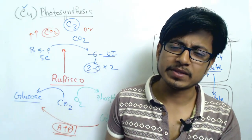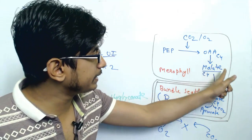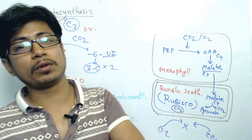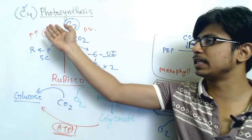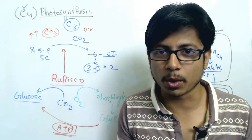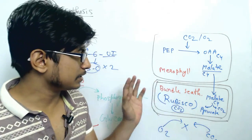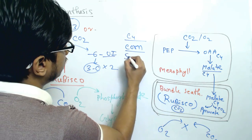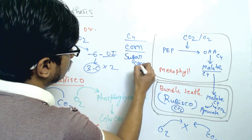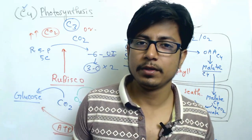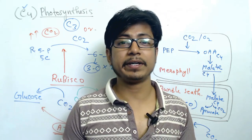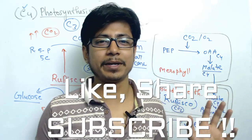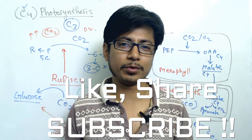That is the C4 pathway. We call it the C4 pathway because the first stable intermediate is the 4-carbon component — oxaloacetate/malate — unlike C3 where the first stable intermediate is the 3-carbon component. Examples of C4 plants include corn and sugarcane, which utilize the C4 pathway for better utilization and fixation of carbon dioxide with the help of RuBisCO. If you like this video, please hit the like button, share it with your friends, and subscribe to the channel for more videos.